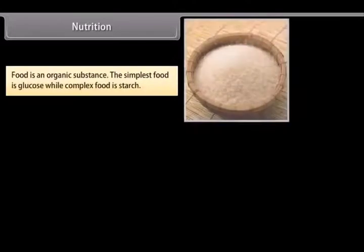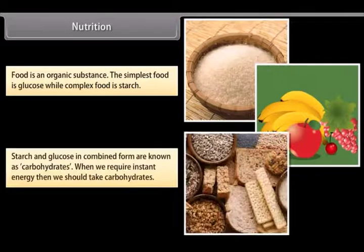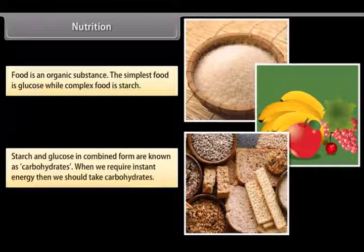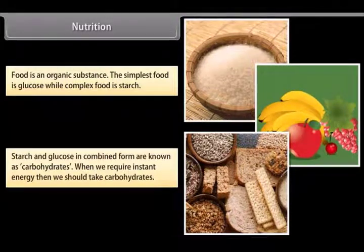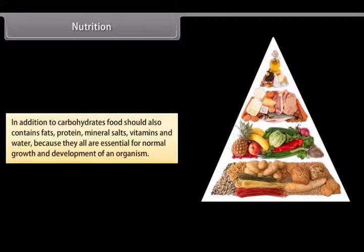Food is an organic substance. The simplest food is glucose while complex food is starch. Starch and glucose in combined form are known as carbohydrates. When we require instant energy, we should take carbohydrates. In addition to carbohydrates, food should also contain fats, protein, mineral salts, vitamins, and water because they all are essential for normal growth and development of an organism.